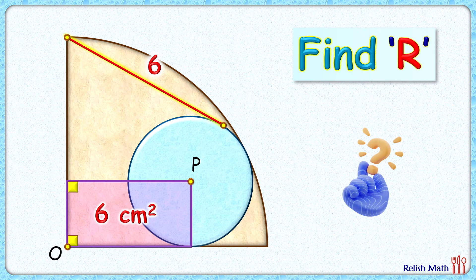Welcome everyone. The interesting question given to us involves a quadrant and a circle with center O and center P. The purple rectangle area is 6 cm² and the length of the red tangent is 6 cm. The exciting part is that with this limited data we have to find the radius of this quadrant.